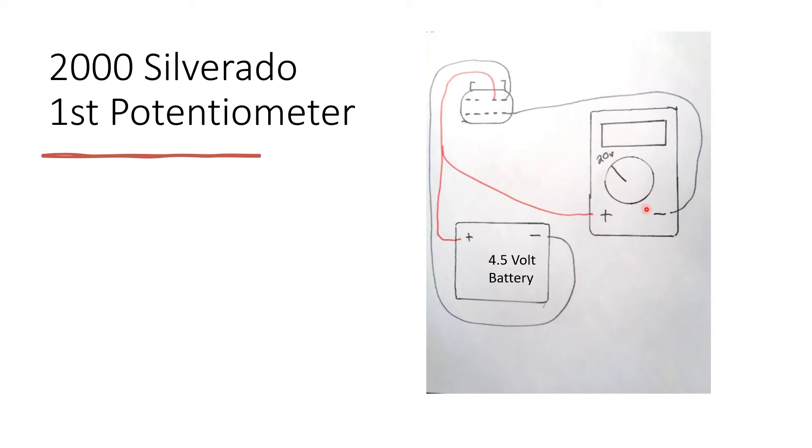You're going to connect the negative from the multimeter to this bottom right pin like this. You connect the negative from the battery to the top right pin just like this. And then you connect the positive from both the battery and the multimeter to the second to the right top pin.